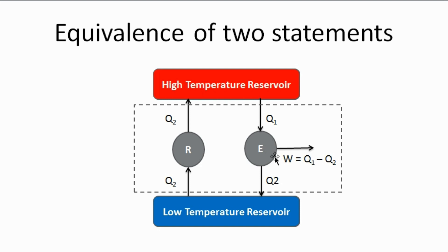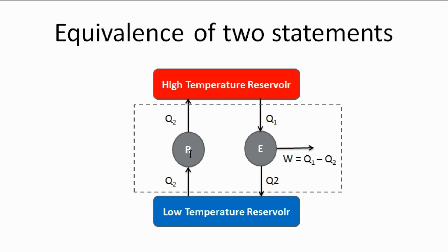Looking at this system, the engine is producing W amount of work to the atmosphere. Considering this as a whole single system, it removes Q1 minus Q2 amount of heat from the high temperature reservoir and delivers work of equal amount, that is Q1 minus Q2. This means all the energy obtained from the high temperature reservoir is converted into an equivalent amount of work, which is nothing but a violation of the Kelvin-Planck statement. Therefore, if we violate the Clausius statement, the Kelvin-Planck statement automatically gets violated.